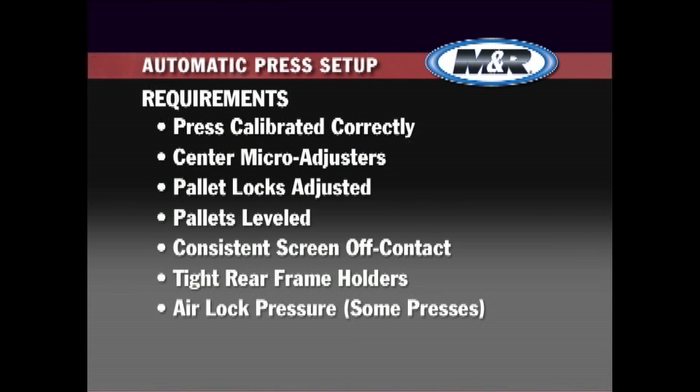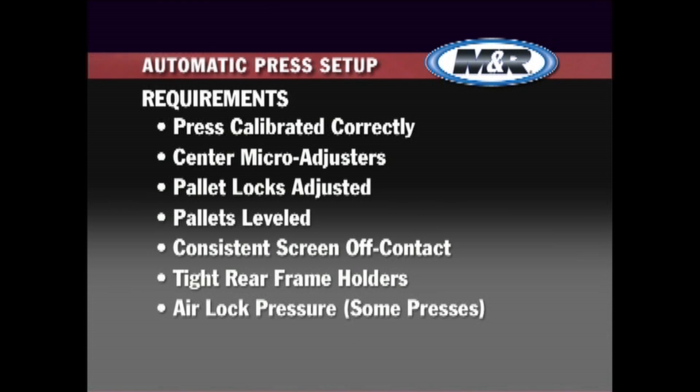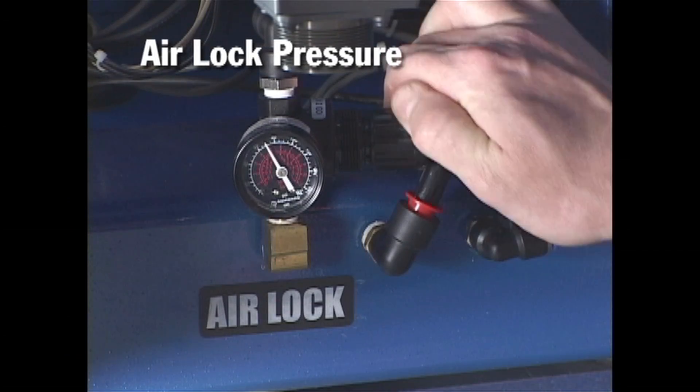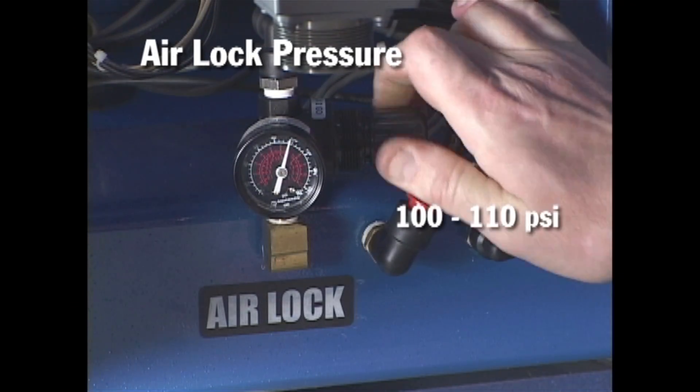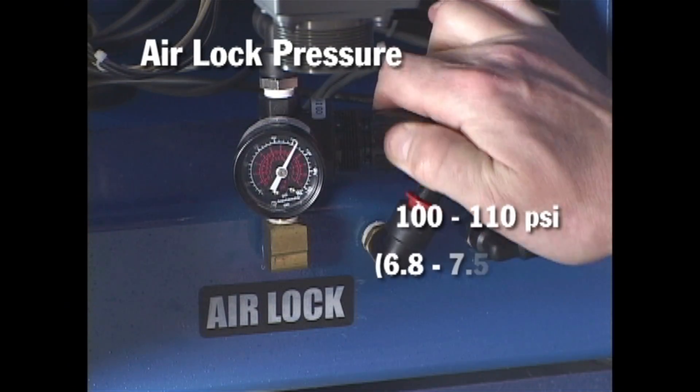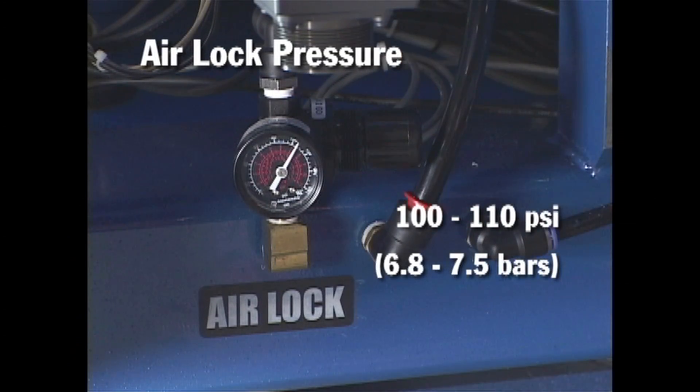Some M&R automatic presses are equipped with a frame airlock pressure regulator at the base of the machine. Remove the lower cover to access the regulator and set the regulator between 100 and 110 psi or 6.8 and 7.5 bars.